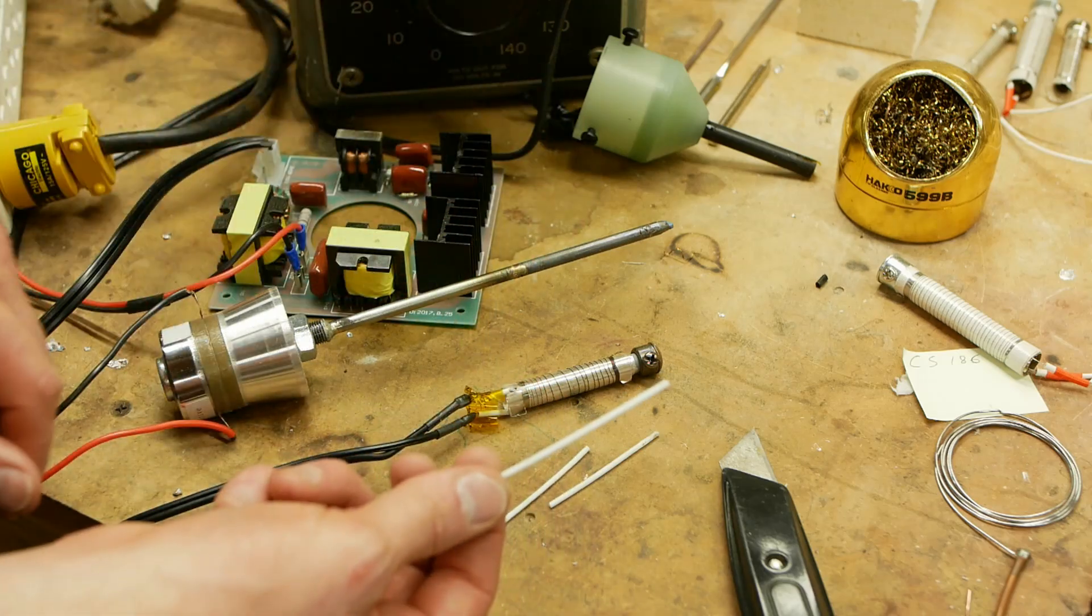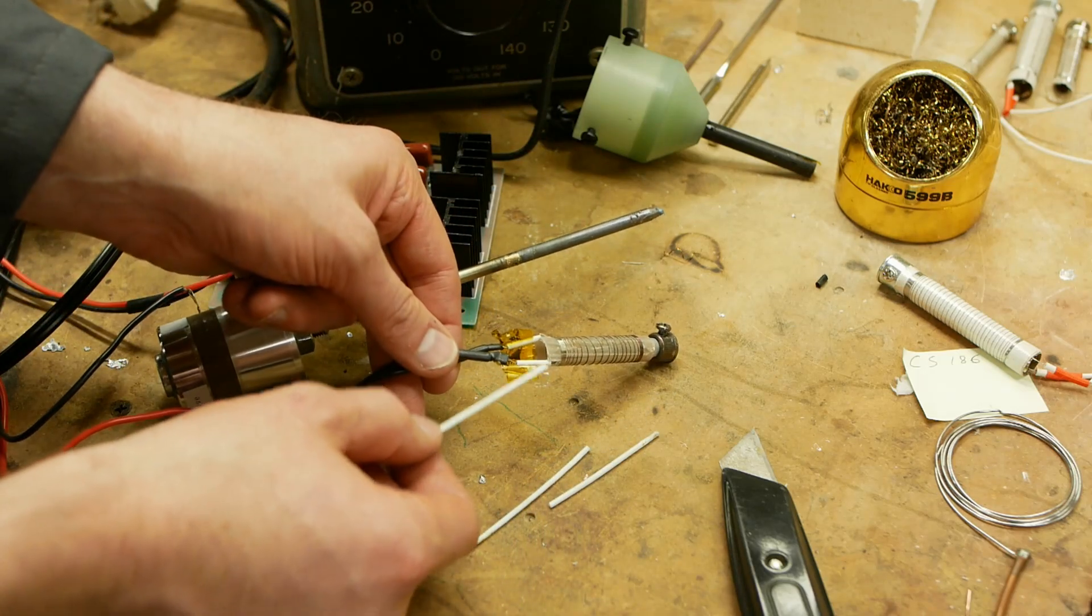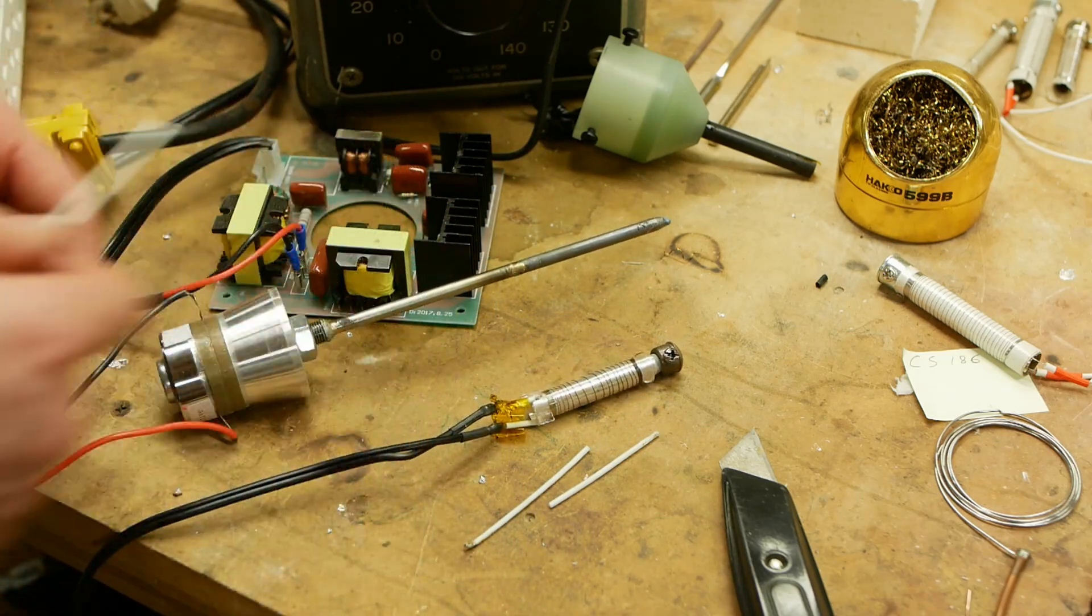Instead, I found another brand of soldering iron that has hard ceramic tube insulators in there. And so I just broke this into pieces and used this as the insulator to keep the wires away from the center rod.